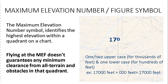For example, 17,000 feet. The highest elevation anywhere on these charts, along with its latitude and longitude coordinates, is published on the color-coded elevation legend. Flying at the Maximum Elevation Figure does not guarantee any minimum clearance from all terrain and obstacles in that quadrant.